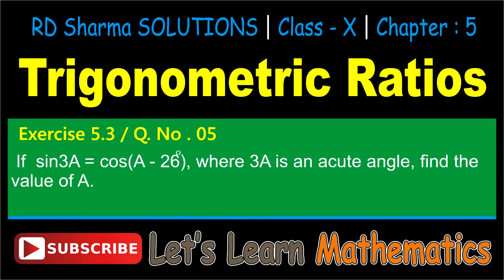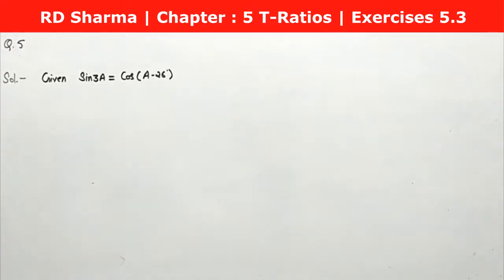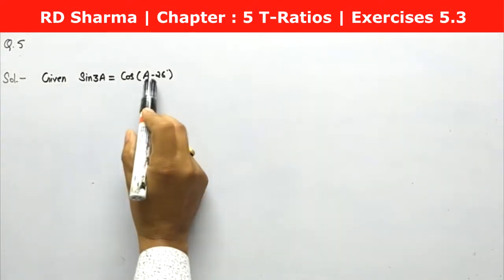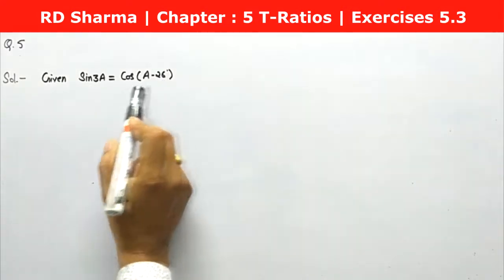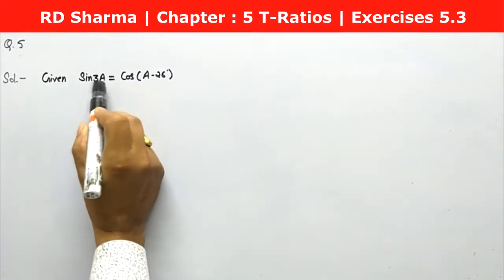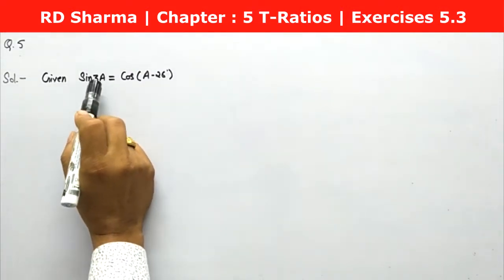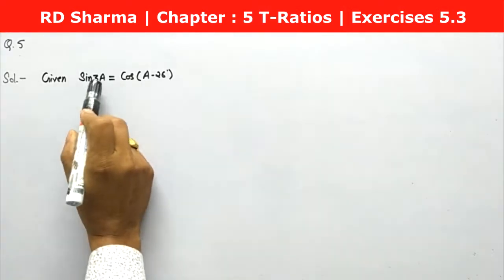Let's solve question number 5, question a. If sine of 3a equals cos of (a minus 26 degrees), where 3a is an acute angle, find the value of a. We have been given that sine of 3a equals cos of (a minus 26 degrees), and 3a is an acute angle — meaning less than 90 degrees.